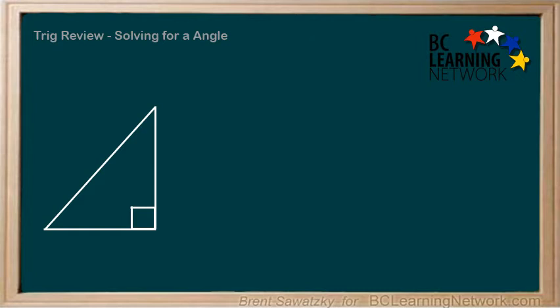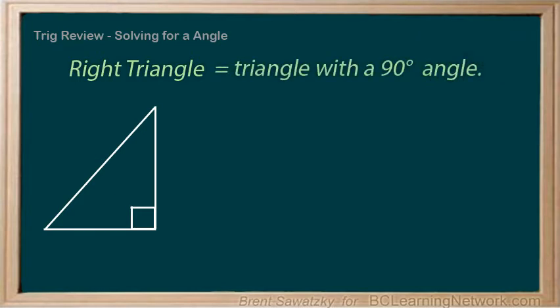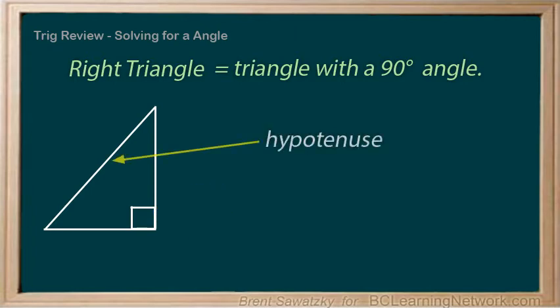Let's remind ourselves that the basic trig ratios only work for right triangles, that is triangles with a 90 degree angle in them. The square in our example indicates that it is a 90 degree angle, and thus we're working with a right triangle. The hypotenuse is always the longest side and always the side across from the 90 degree angle.